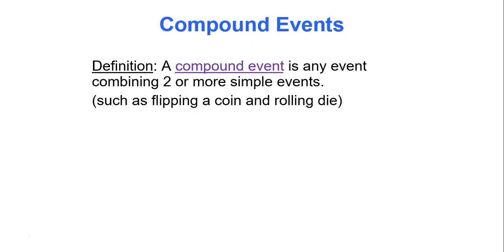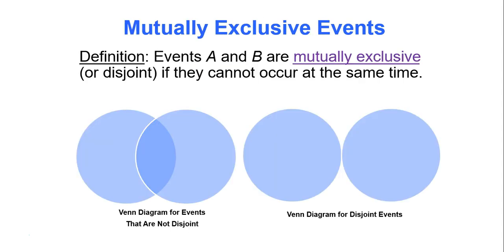By definition, a compound event is any event combining two or more simple events, such as flipping a coin and rolling a die. The two can be brought together into the same experiment, but they are both two different simple events.